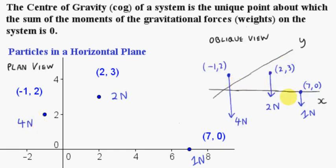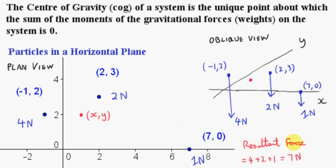Here is a rough sketch of an oblique view of the system. Roughly speaking, whereabouts is the center of gravity of the system? Well, we have greater force at these two points than at this corner of the triangle — we only have a 1 Newton force — so we would expect the center of gravity to be close to these two points, because that's where most of the force is. Let's call the coordinates of the center of gravity x, y. What's the magnitude of the resultant force on the system? All the vectors are pointing in the same direction, so we just add up the magnitudes to get 7 Newtons.